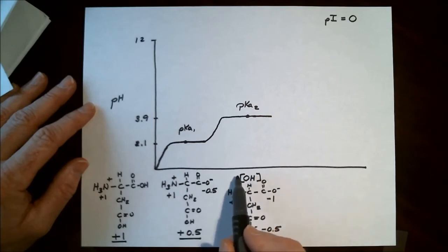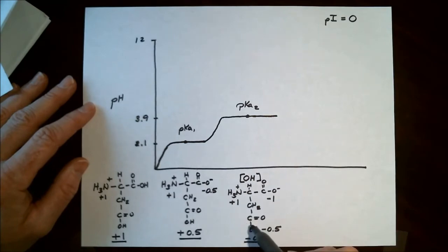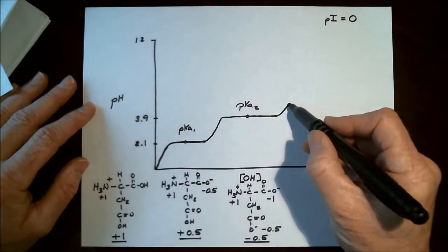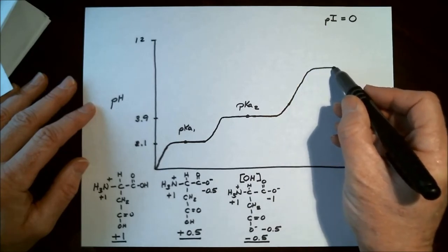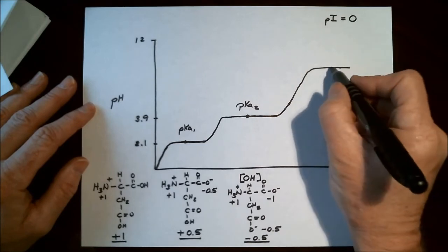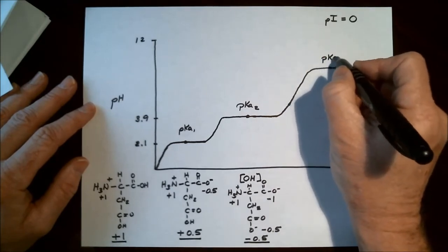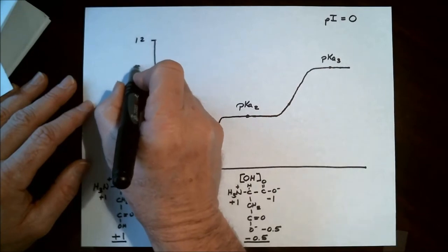Now as we continue our titration of hydroxide ion, we will leave the buffering zone of the R chain carboxylic acid and the pH will begin to climb. Finally, we will reach a plateau that is our final buffering functional group. And this is pKa3 of the aspartate molecule. This pKa is represented at pH of 9.8.